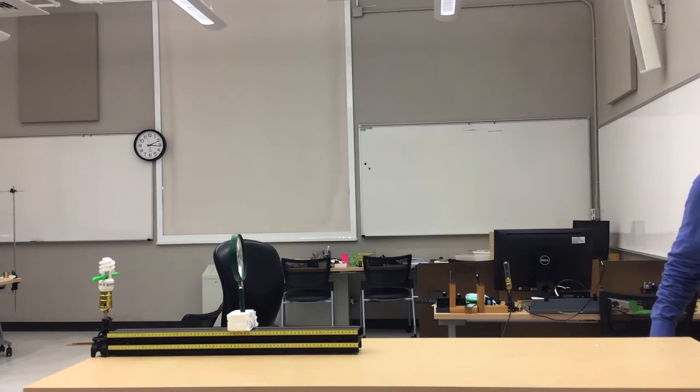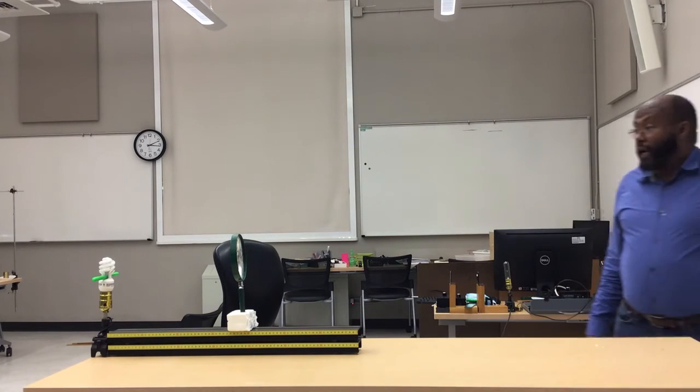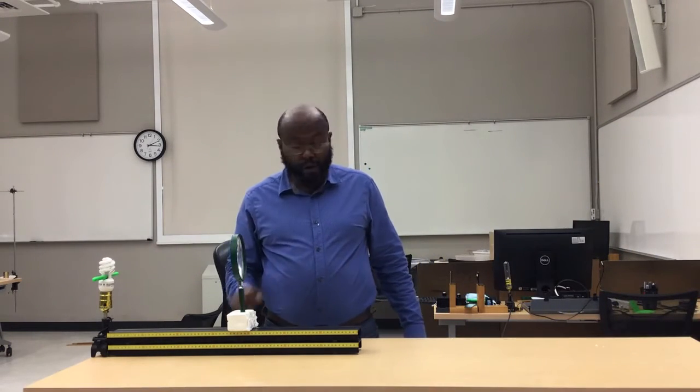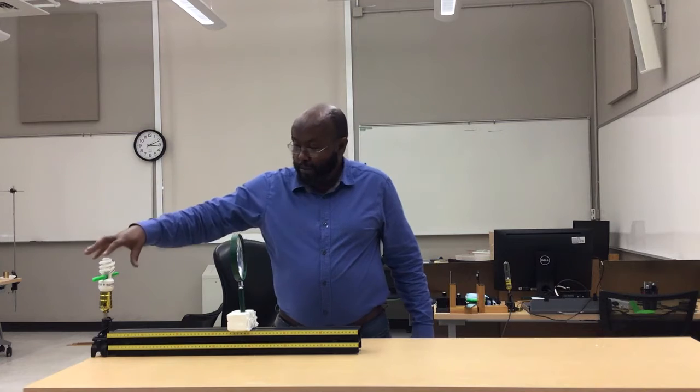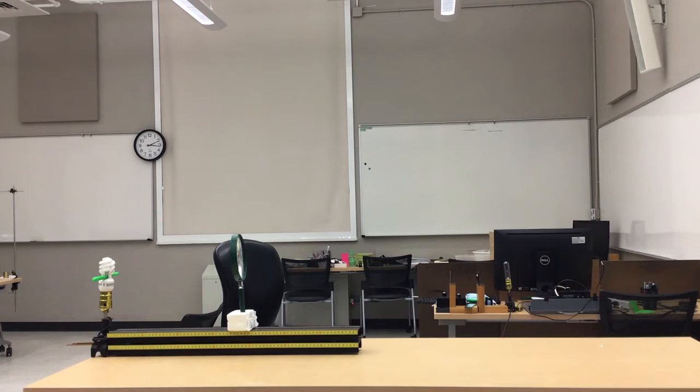This is where we are going to project the image of the fluorescent bulb with the highlighter placed horizontally. We have the object which is close to the lens and the screen which is far away.